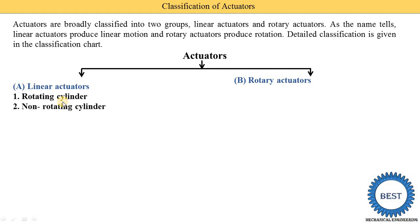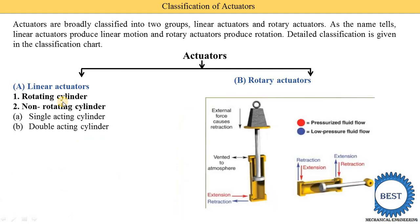The second type is the non-rotating cylinder. In non-rotating cylinders there are two types: first is the single acting cylinder and second is the double acting cylinder. In the image, the yellow portion is the cylinder (shown as a cross-section), and you can see the piston and the piston rod. This piston rod is connected to some load which we need to move, lift, or press depending on the application.